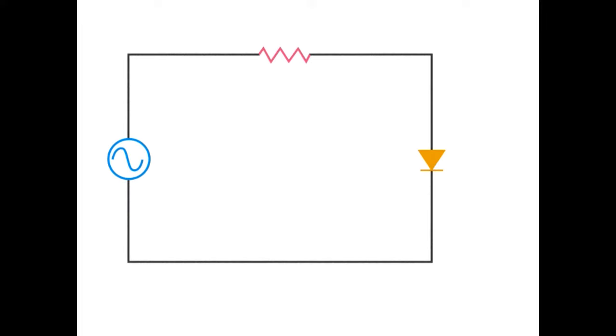A silicon-controlled rectifier, or SCR, is a specialized type of control diode. The electron flow is the same as in an ordinary diode, from cathode to anode.